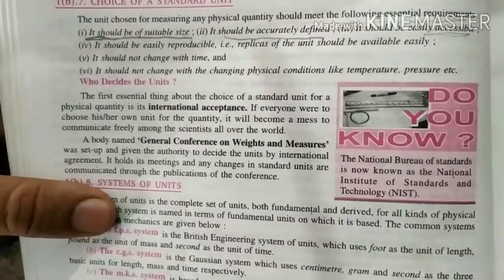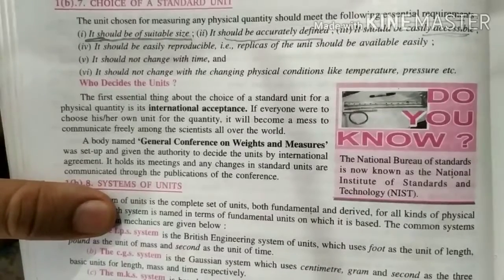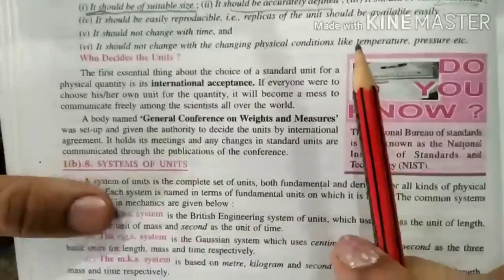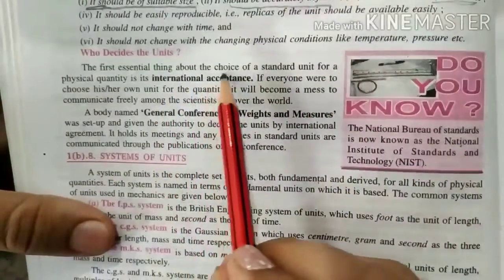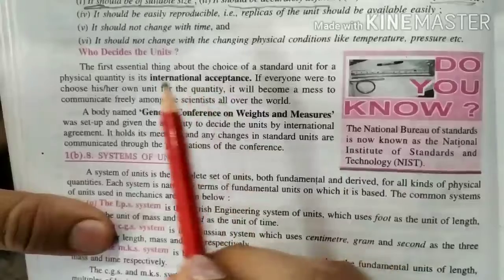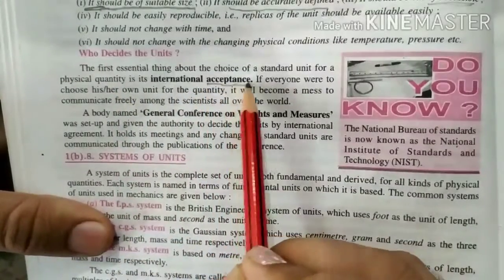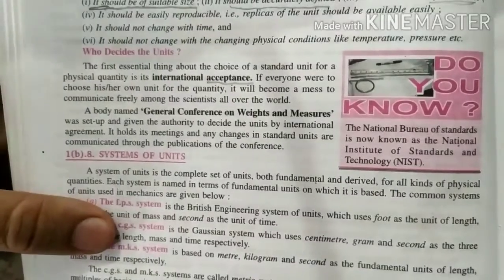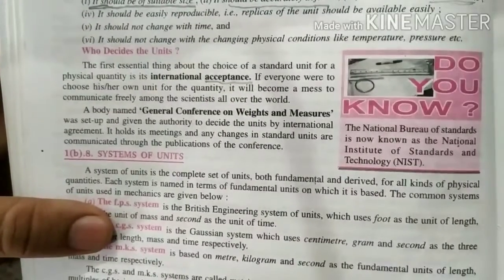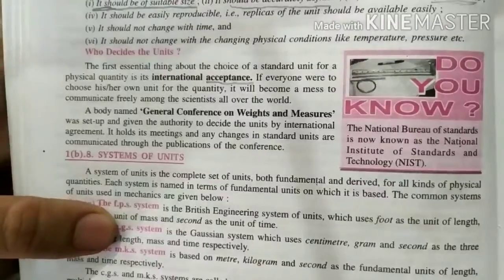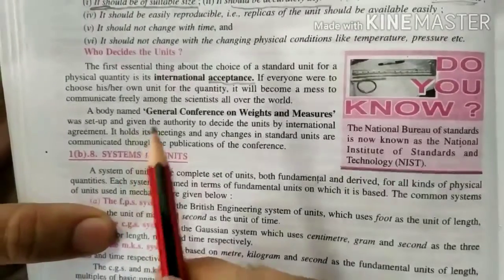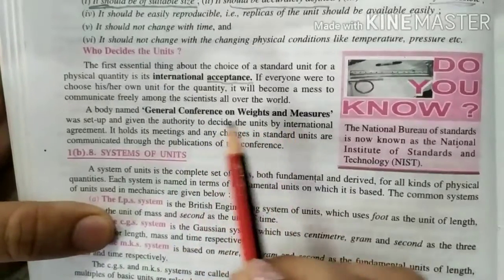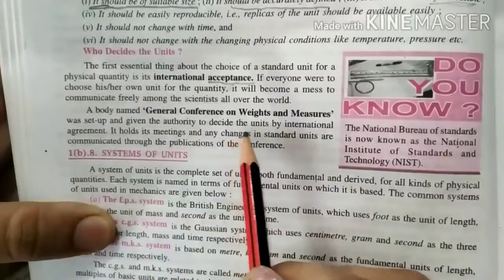The first essential thing about the choice of the standard unit for a physical quantity is international acceptance. An international bureau of scientists decides which unit will be correct. A body named General Conference on Weights and Measures was set up and given the authority to decide the unit.